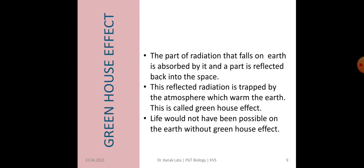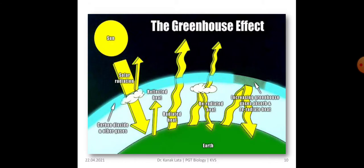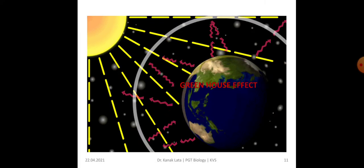The next topic for discussion is greenhouse effect. The part of heat radiation that falls on earth is absorbed by it and a part is reflected back into space, as we have discussed earlier. This reflected radiation is captured by the atmosphere and this helps in keeping the earth warm, which is called the greenhouse effect. Our life would not have been possible on the earth without greenhouse effect. This figure depicts the greenhouse effect.